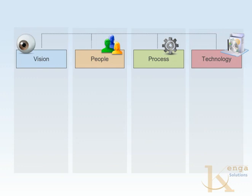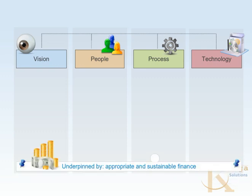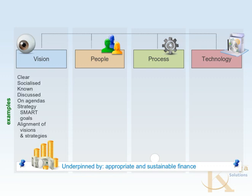Let's look at this ecosystem from another perspective. Taking the vision, people, process, and technology underpinned by sustainable finance — what's in the vision basket? To what extent is the vision clear? Is it socialized, known, talked about? Is it on people's agendas? Is it unpacked into a strategy with SMART goals? How well is it aligned and does it articulate with other visions and strategies in the organization? You can unpack these things into indicators and use those indicators to measure the extent to which the vision is at risk.